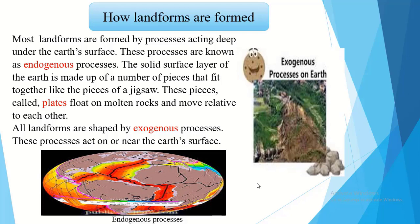The solid surface layer of the earth is made up of a number of pieces that fit together like the pieces of a jigsaw. These pieces, called plates, float on molten rocks and move relative to each other. As they move, parts of the earth's surface are pushed up, pulled down, bent or broken to create new landforms.